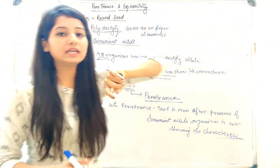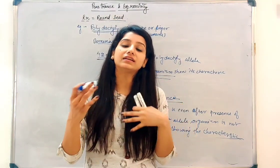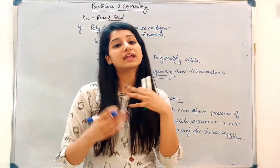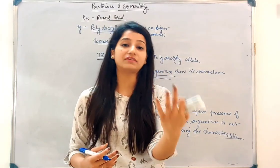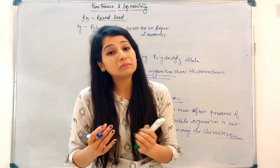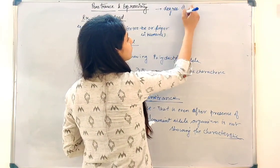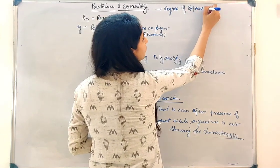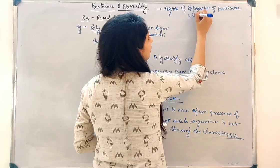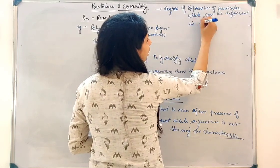And what is expressivity? Expressivity is that a specific allele can express itself in different manners — like it can express at 100%, at 70%, at 60%. It can express differently in different organisms. In some organisms it would be 100%; in some organisms maybe it will be 50%. So it is the degree of expression of a particular allele, which can be different in different organisms.